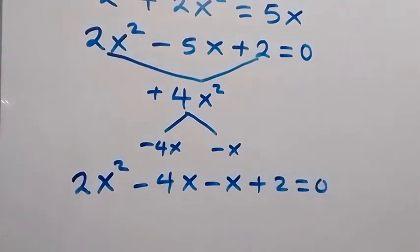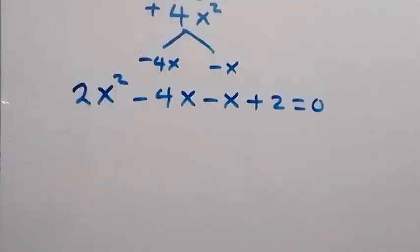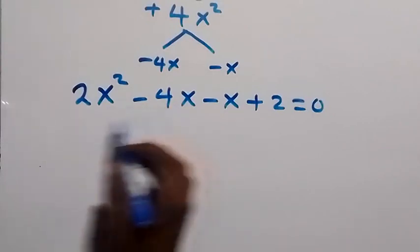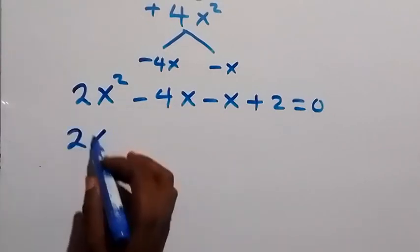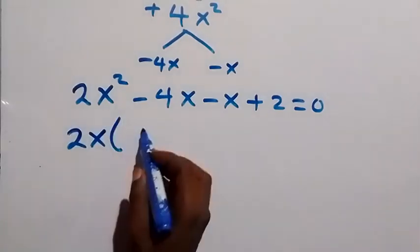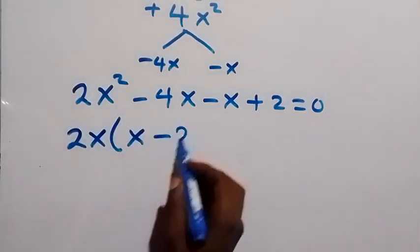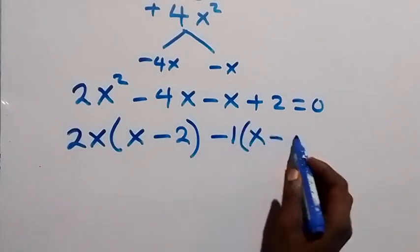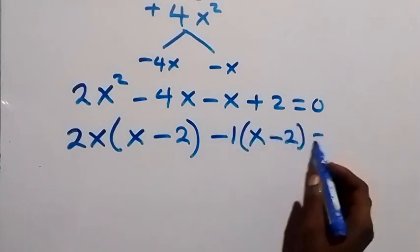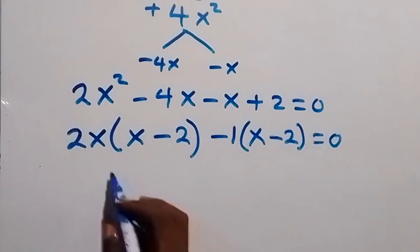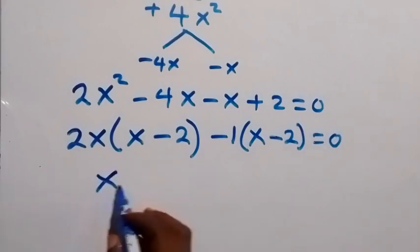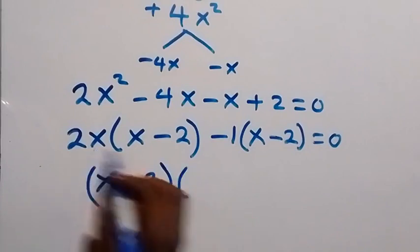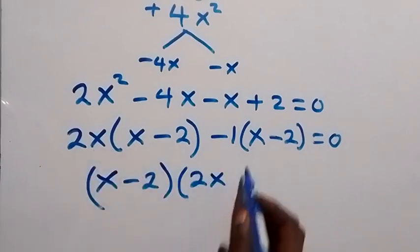We group the terms in pairs and factor out what is common. From the first pair, 2x is common, leaving x minus 2. From the second pair, minus 1 is common, also leaving x minus 2. So we factor out x minus 2, giving us x minus 2 times 2x minus 1 equals 0.